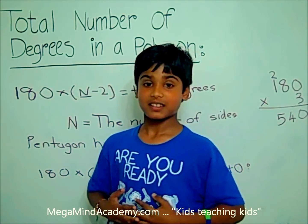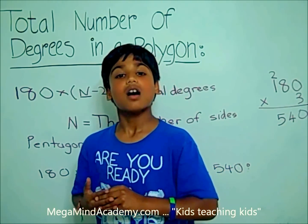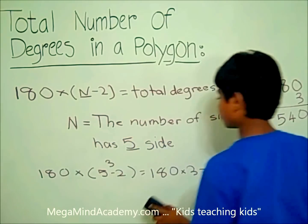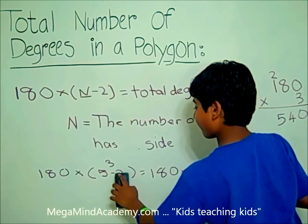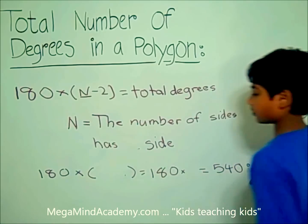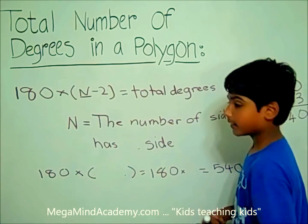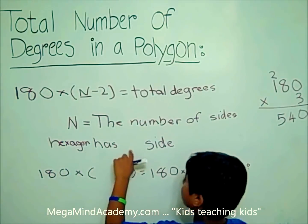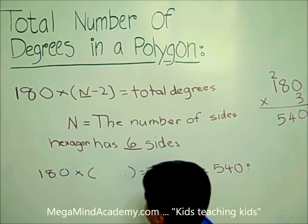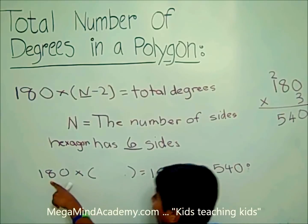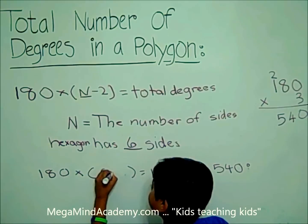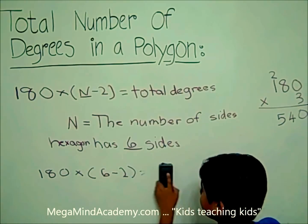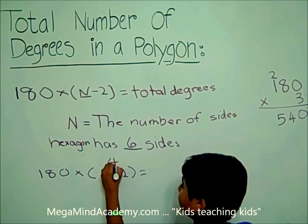Now let's look at another example. Let's say the polygon is a hexagon. A hexagon has six sides. So the formula is 180 times (6 minus 2): six minus two equals four, so it's 180 times four.